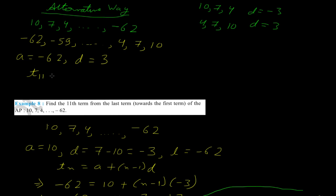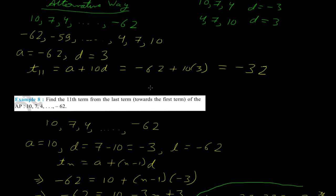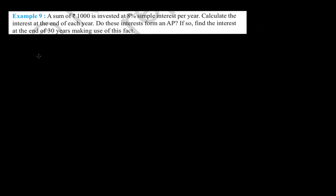With the flipped AP, we compute: T₁₁ = a + 10d = -62 + 10(3) = -62 + 30 = -32. We reach the same answer much more quickly. The key insight is that flipping the AP lets us count from the beginning instead of the end, while remembering that the common difference changes sign.